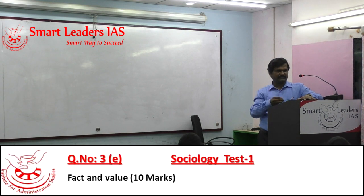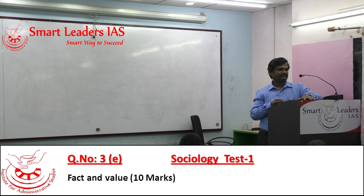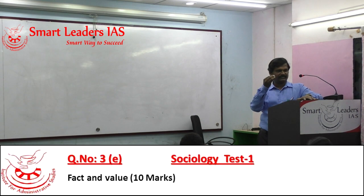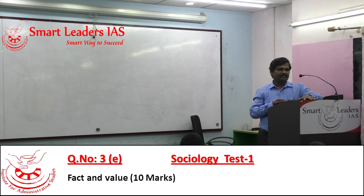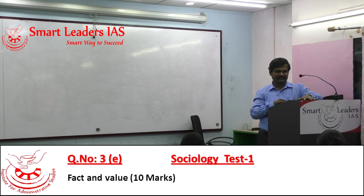Max Weber says values guide human behavior. In his Protestant Ethics, he shows how Protestant ethics — a value — guides human action. Action for Weber includes meanings and motives given by mind. So divorcing the study of mind from the study of society would be a sociological mistake, and studying value objectively is a challenge posted before any social science researcher.